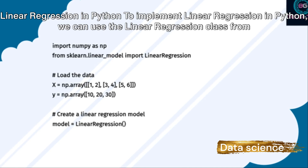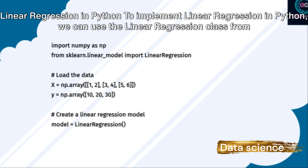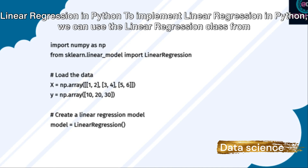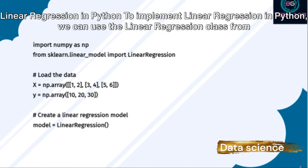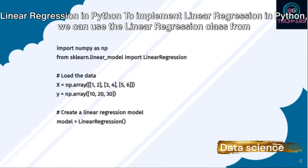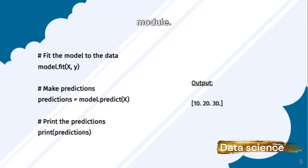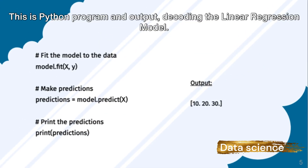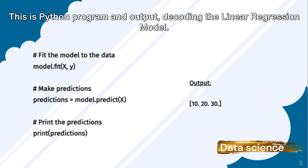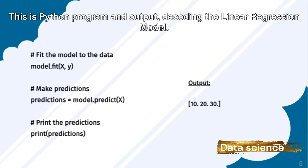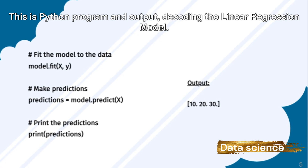Linear Regression in Python. To implement linear regression in Python, we can use the LinearRegression class from the sklearn.linear_model module. This is a Python program and its output, decoding the linear regression model.